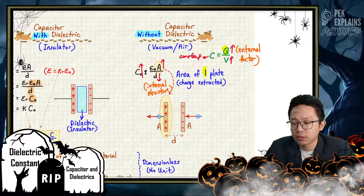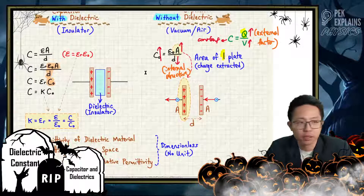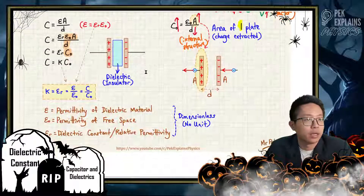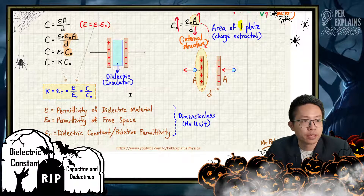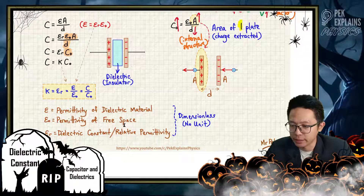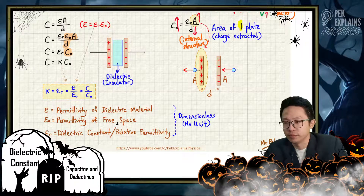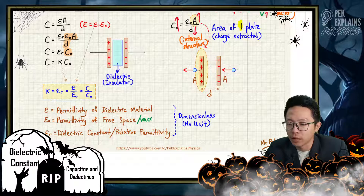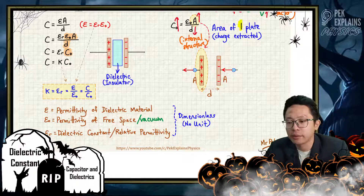ε₀ is called the permittivity of free space. Free space is like vacuum or air. We say permittivity of free space, not permittivity of vacuum.